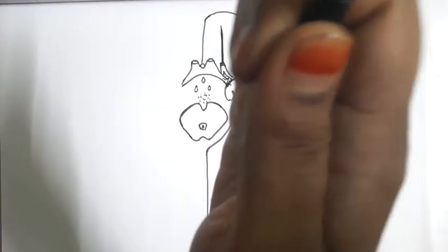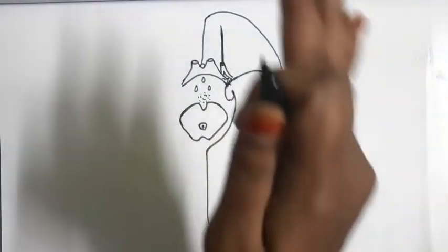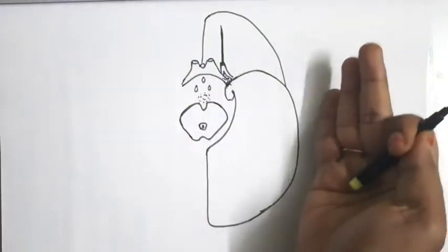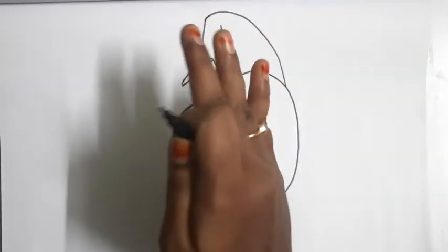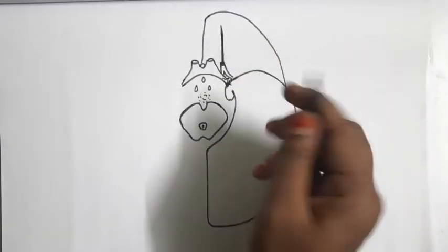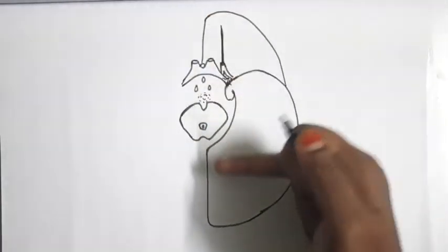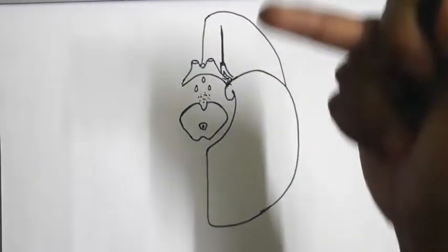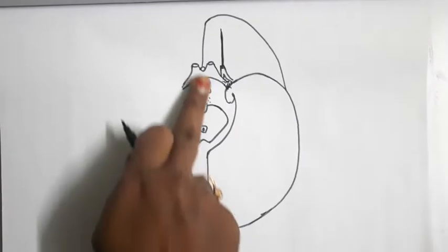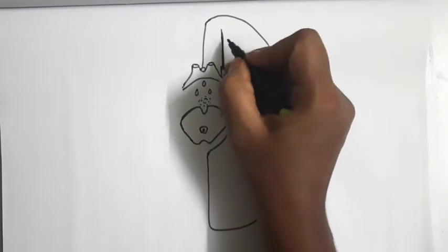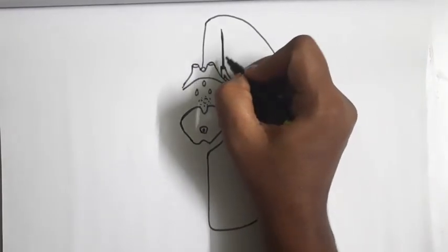For the brain, there is the superolateral surface, the medial surface, and the inferior surface. The borders are: the superomedial border at the top, the inferomedial border, and the inferolateral border. The first sulcus seen on the orbital surface is known as the olfactory sulcus, which runs from anterior to posterior in direction, nearer to the inferomedial border of the orbital surface.